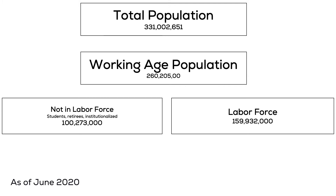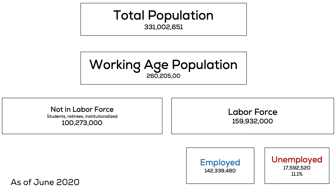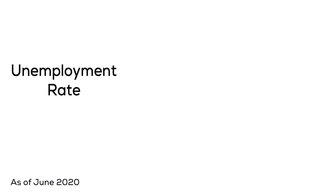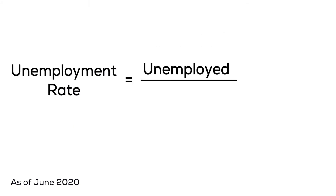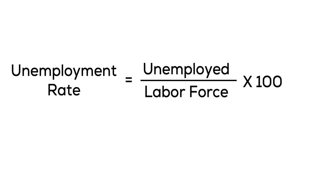The labor force is then split into two different groups: those that are employed and those that are unemployed. Using this information, we can then calculate the unemployment rate by dividing the unemployed by the labor force and multiplying it by 100. This is how the U-3 calculation of the unemployment rate is done.